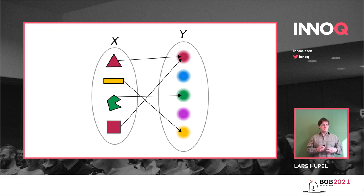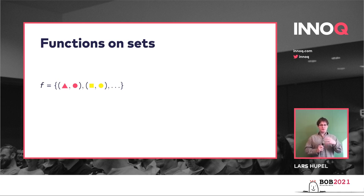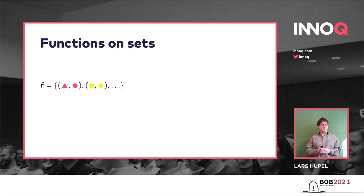Furthermore, we can describe such functions as sets themselves. A function is basically a set that contains pairs — every pair is the source and the target. So here we have a set containing the pair red triangle to color red, then yellow rectangle to color yellow, and so on. We can describe these functions as sets also.